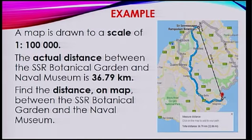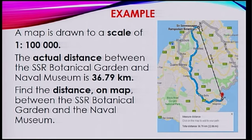Second example. A map is drawn to a scale of 1 is to 100,000. The actual distance between the SSR Botanical Garden and the Naval Museum is 36.79 km. You're asked to find the distance on the map between SSR Botanical Garden and the Naval Museum.